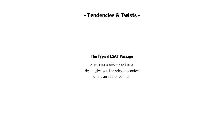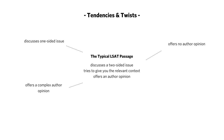It's helpful to think about all the different types of structures you can expect on the LSAT in terms of common tendencies and variations on those tendencies. The typical LSAT passage will be designed to give you some sort of two-sided issue, relevant context you need to think about that issue, and commonly an author's opinion one way or the other. More unusual passages will vary from this script — they may discuss just a one-sided issue, offer no author's opinion, give a complex author opinion, or present a three-sided issue.